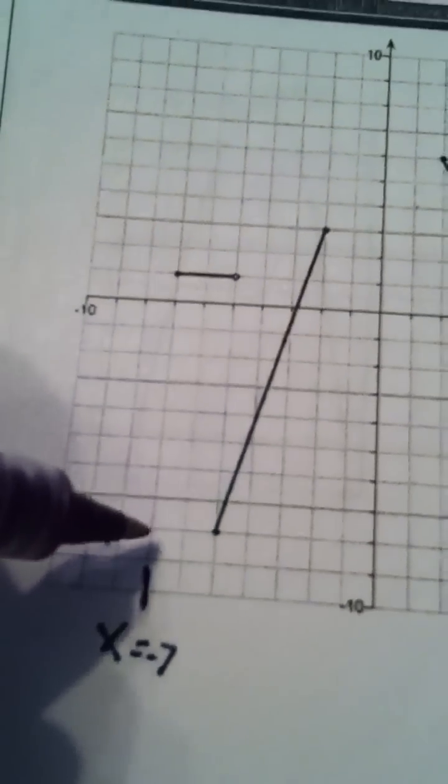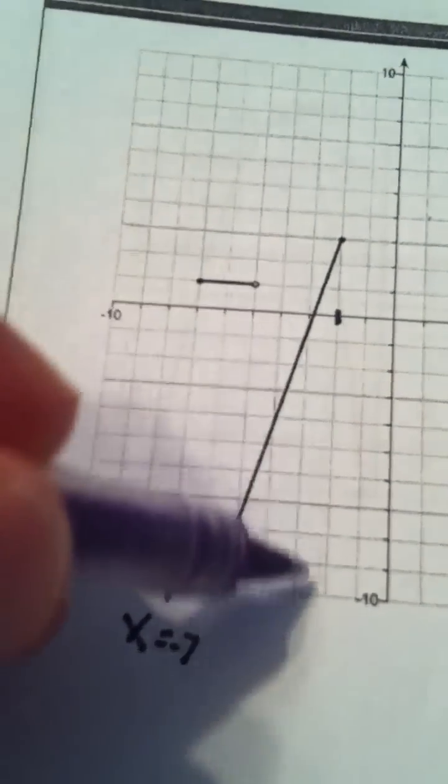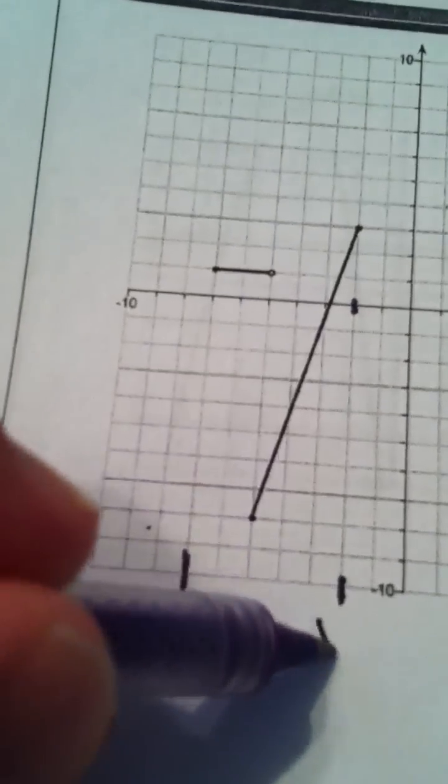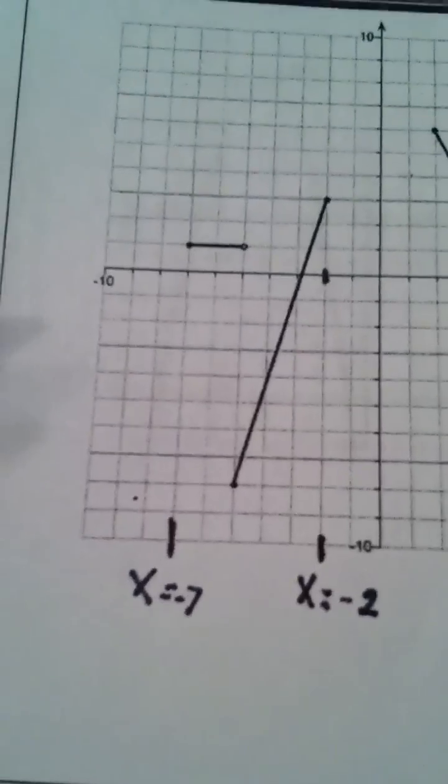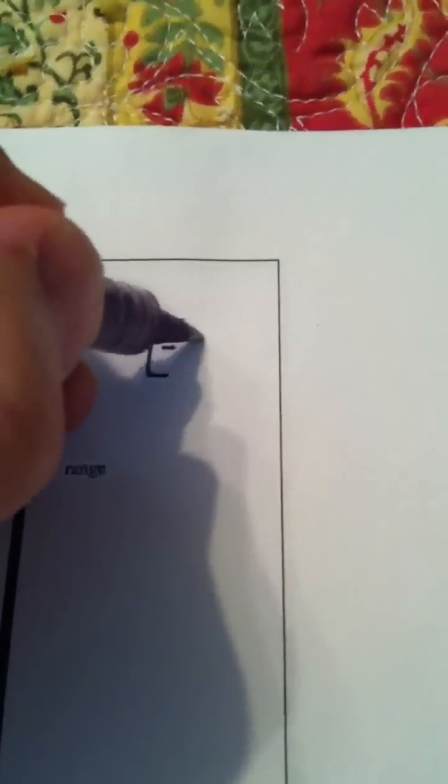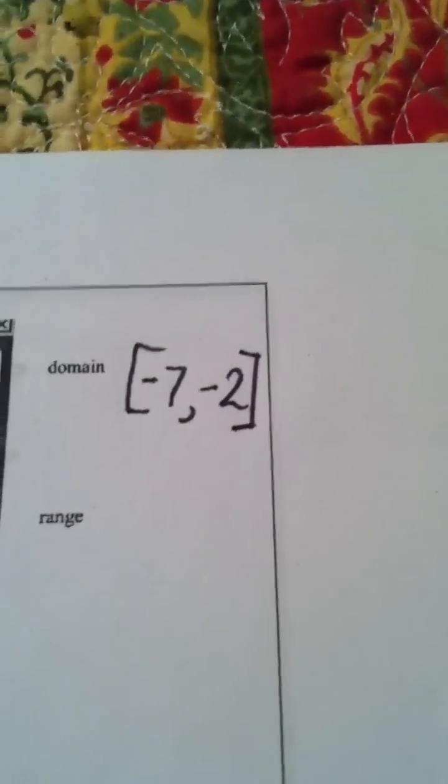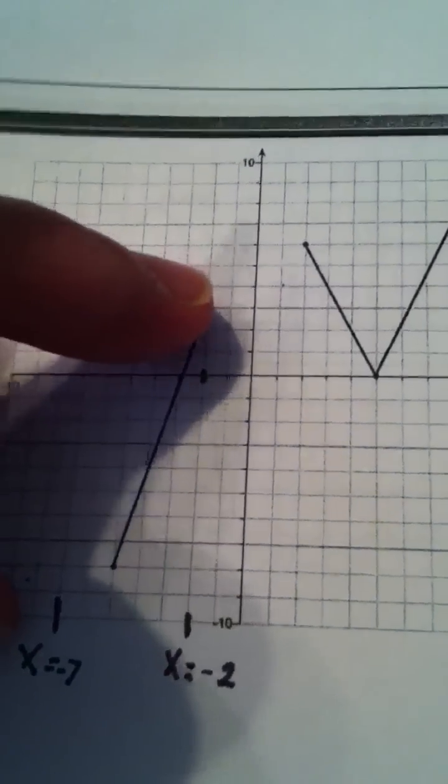So we just keep scanning till we get to that x value which is negative 2. So I've scanned from left to right, I've gone from negative 7 to negative 2. And of course I'm going to put brackets because they're included - these endpoints, the value of negative 7 and negative 2 are included.